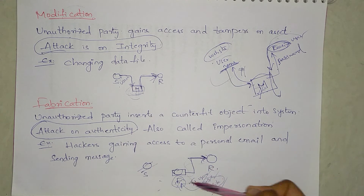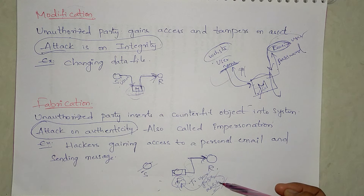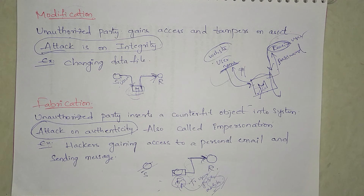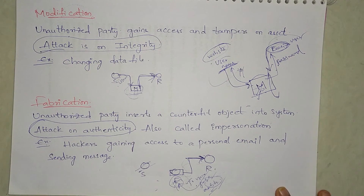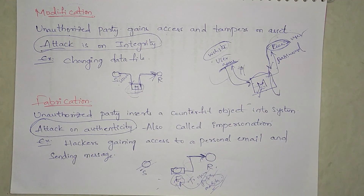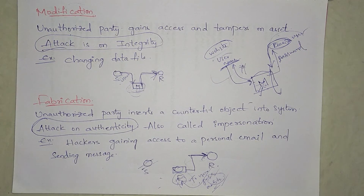Once the hackers get all your credentials, mobile numbers, and other details, they will act like you — sending messages and emails to your friends and relatives without you knowing. You won't find out unless someone notifies you that they received messages or emails appearing to come from you. These four types — interruption, interception, modification, and fabrication — are the most important points in information security.